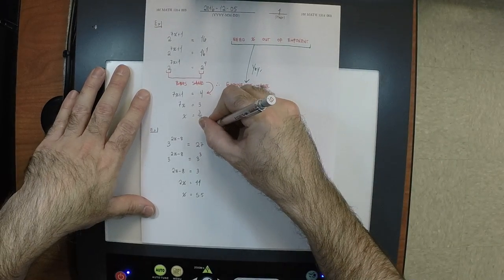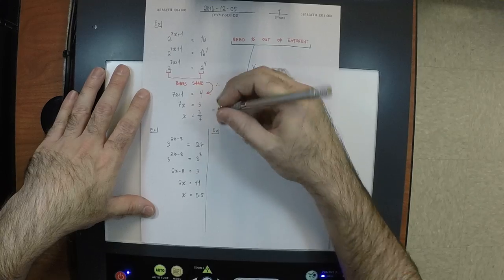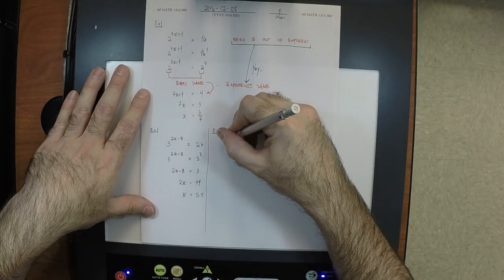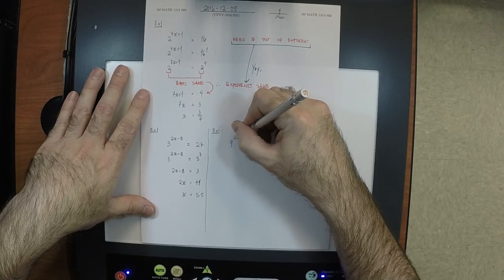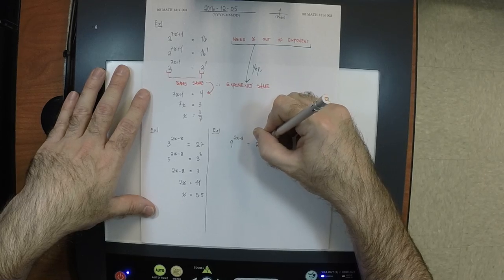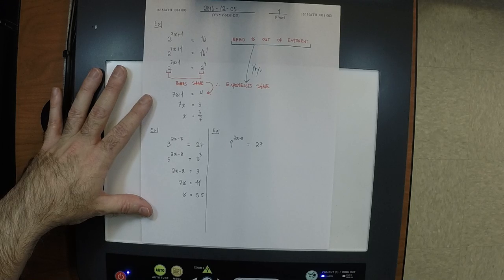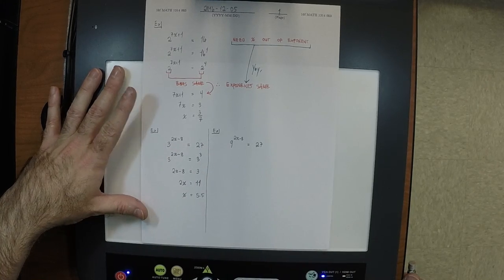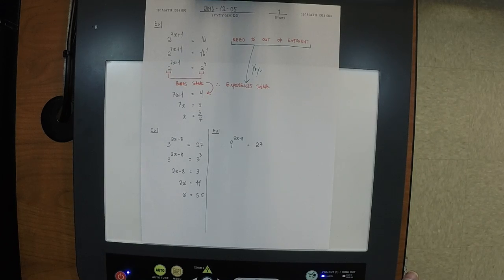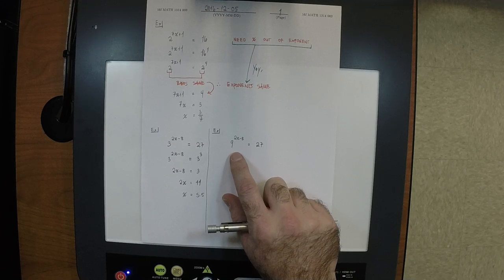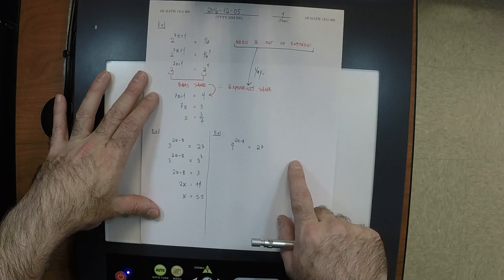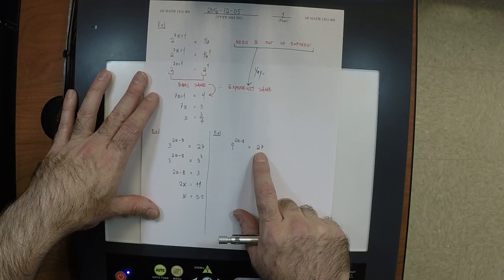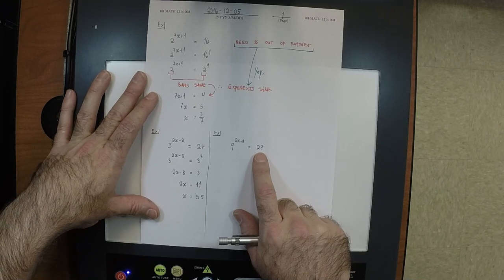What if I make it slightly more interesting: 9 to the power of 2x minus 8 equals 27? It's essentially the same equation, except I changed the 3 to a 9. You can still get the base to be the same, but the exponent on 2x minus 8 is going to change. Can we write both 9 and 27 as powers of 3? Yes. So this is 3 squared to the power of 2x minus 8, equals 3 cubed.